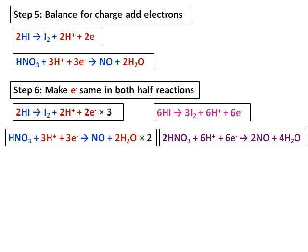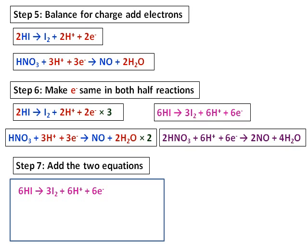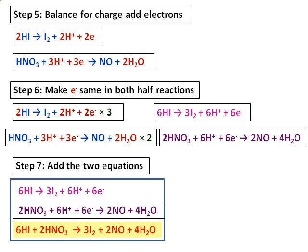Now add the two equations. The 6 electrons will get cancelled and will result in the final equation: 6HI plus 2HNO₃ giving you 3I₂ plus 2NO plus 4H₂O. Just do a final check to see that all the atoms are balanced.